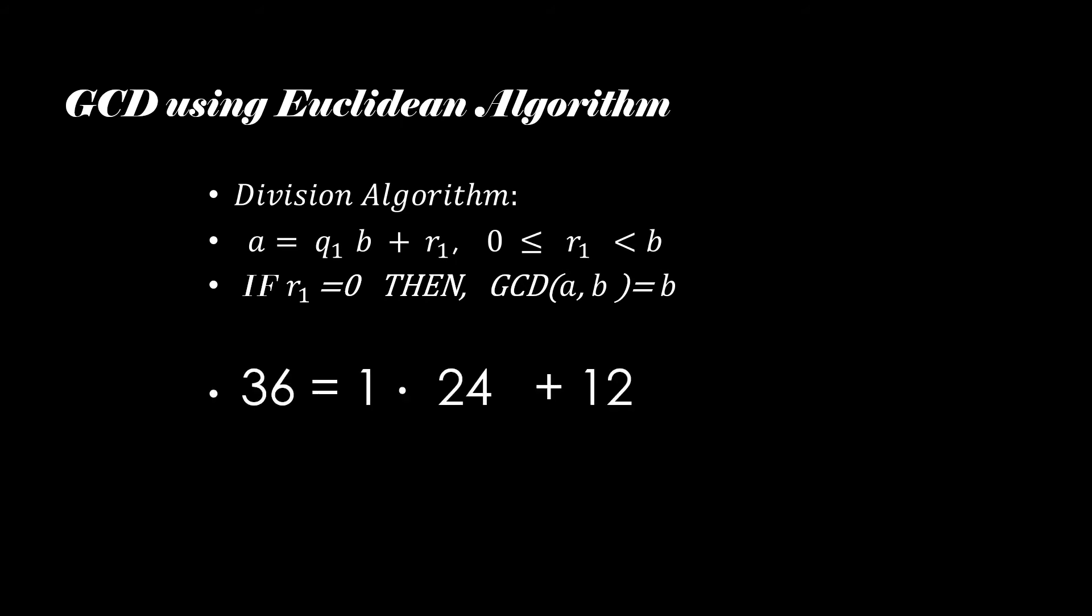So if I have 36 and 24, 36 can be written as 1 times 24 plus 12. Again, that 24 can be written as a product of 2 and 12 plus 0. So that 12 becomes the greatest common divisor of 36 and 24.